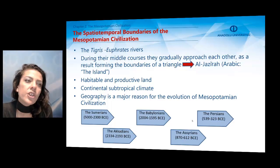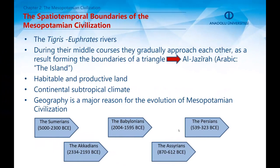When we look at the spatiotemporal boundaries of this civilization, we can see the importance of the Tigris and Euphrates rivers for the development of such a civilization. During their middle courses, these two rivers gradually approach each other, forming a kind of triangle which is called Al-Jazeera — in Arabic, it means the island. This so-called island was quite habitable and productive, with a continental subtropical climate. Geography is therefore a major reason for the evolution of Mesopotamian civilization.